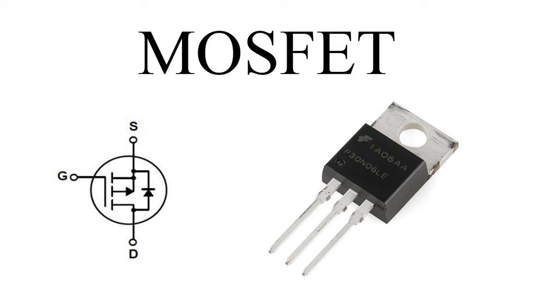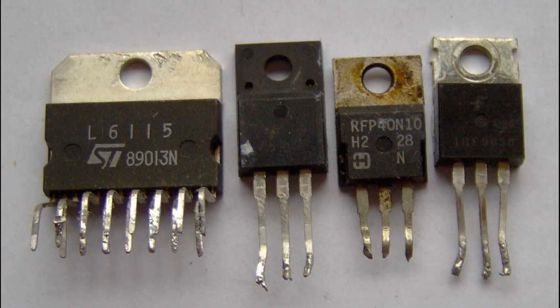MOSFETs can be employed in oscillator circuits, which generate the carrier frequency in modulation systems, playing a crucial role in frequency synthesis for modulation applications. MOSFETs are also used in phase-locked loops, PLLs, which are essential for maintaining precise synchronization and stability in frequency modulation systems, ensuring that the modulating and carrier signals are accurately aligned.